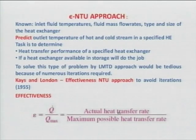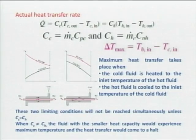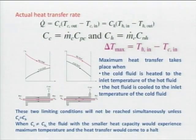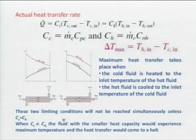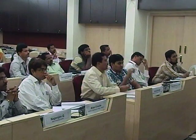Epsilon equals actual heat transfer divided by maximum possible heat transfer. We know the maximum possible heat transfer occurs between the maximum and minimum possible temperatures. The question is: which m-dot-Cp do I use for this maximum temperature difference? The answer is the minimum m-dot-Cp. How do you explain to students why minimum m-dot-Cp is taken instead of maximum? It will give maximum heat transfer.